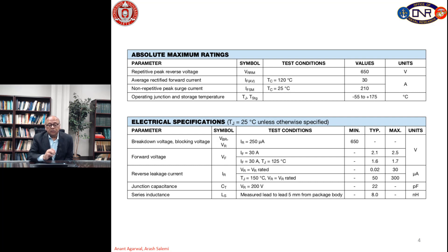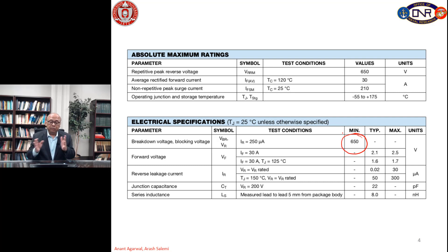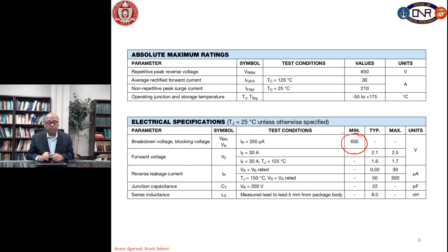The test conditions are a leakage current of 250 microamps and the minimum breakdown voltage is 650 volts. That means diodes will have a variation from 650 to say 700 volts, but the minimum guaranteed is 650 volts. Typically at 650 volts, the leakage current at 25 degrees C would be 250 microamps — that's typical, there would be some variation around that.